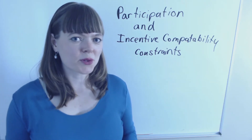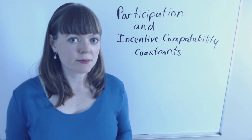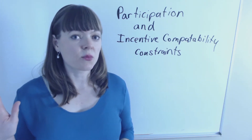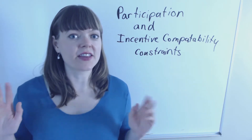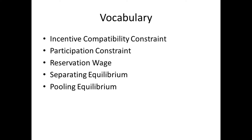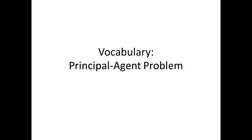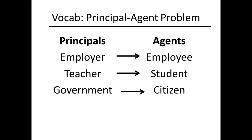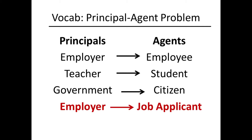In this video I'm going over how employers decide which employees get the high wages and which employees get the low wages, and they do this by setting an educational requirement. It's an example from Hal Varian's textbook. This is a principal-agent problem, which just means the principal is trying to incentivize the agent to do something in particular — in this case, incentivize job applicants to sort themselves naturally into high-paying and low-paying jobs.